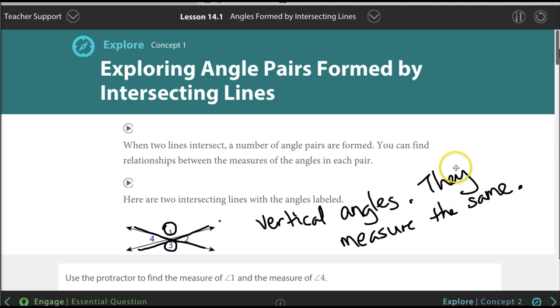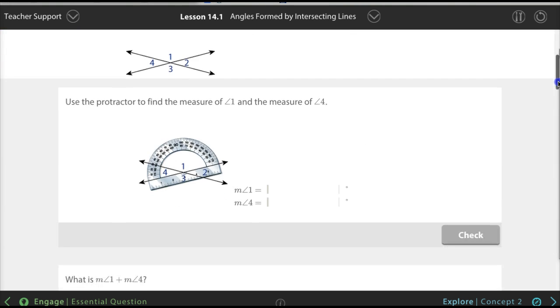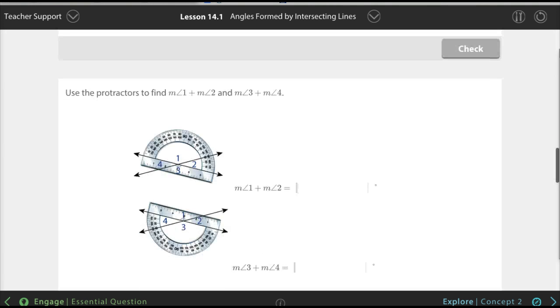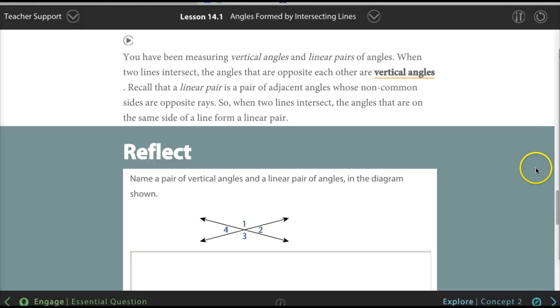But here's the problem. If I just tell you this, it's so easy, it's only been a minute since I started recording. But it doesn't really help you learn. What I'm going to do is have you do all of this by yourself. Vertical angles means they're opposite each other, angles that are opposite each other.